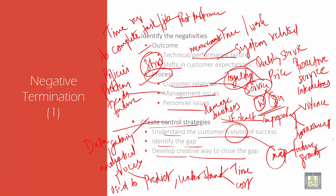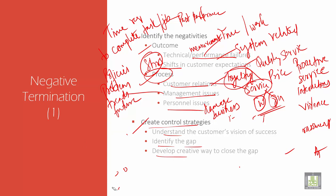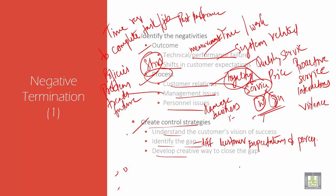Identify the gap. The gap is actually a difference between customer expectations and perceptions. In terms of project management, a gap means delivering the best service quality based on customers' expectations and needs.